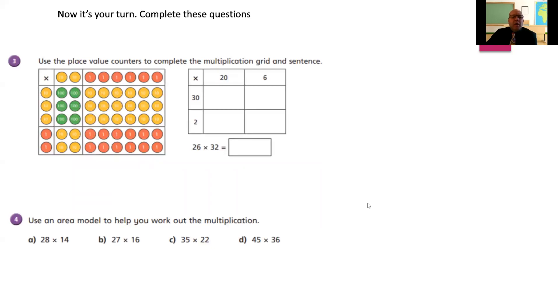Right. It's your turn now. Use the place value counters to complete the multiplication grid and the sentence. So the question is all set out for you there. All you need to do is work out what numbers should be in the grid here and what the final answer is. Question four. Using the area model, work out the following four questions. So I'd like your questions set out in this way, please, guys. I want to see your working. Pause the video. Have a go at those.